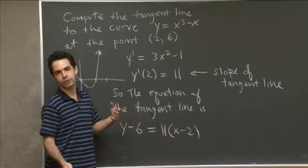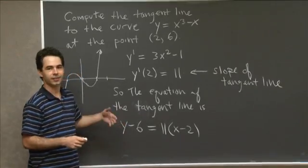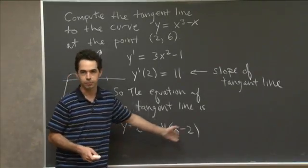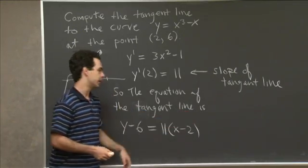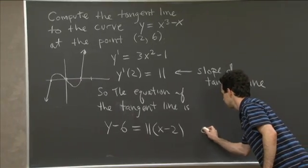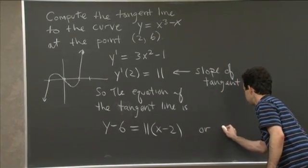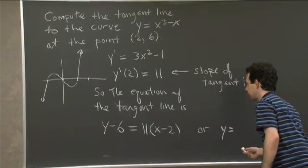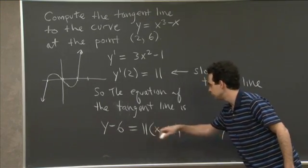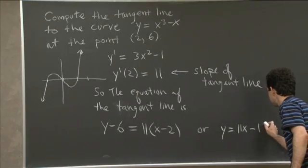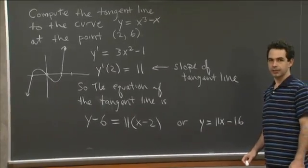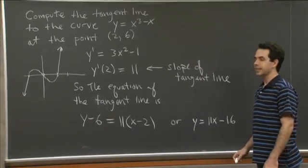Some people prefer slope-intercept form. You could multiply through by 11 and bring the constants together. That gives y = 11x - 16. Either of those is a perfectly good answer. Thank you.